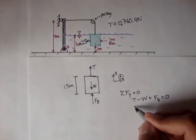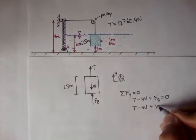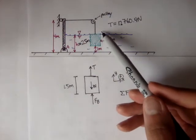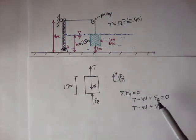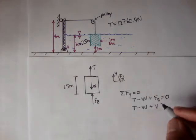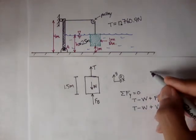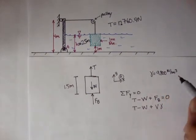And we know that the buoyant force is equal to the volume of the water displaced, or that's equal to the volume of the block. Because it's completely submerged. If it's completely submerged, that means the volume of the object is equal to the volume of the water displaced, times the specific weight of the liquid displaced, in this case it's water.